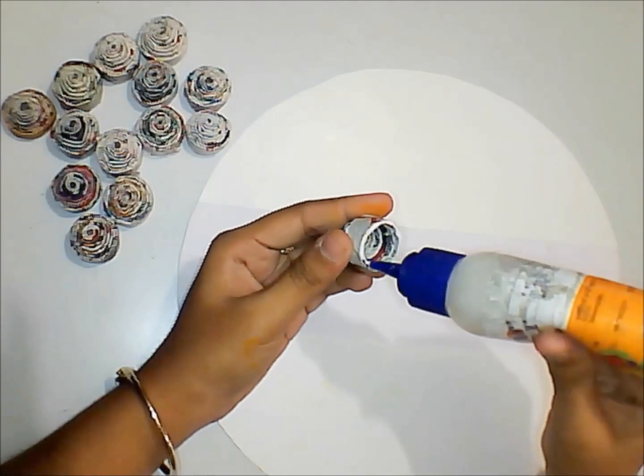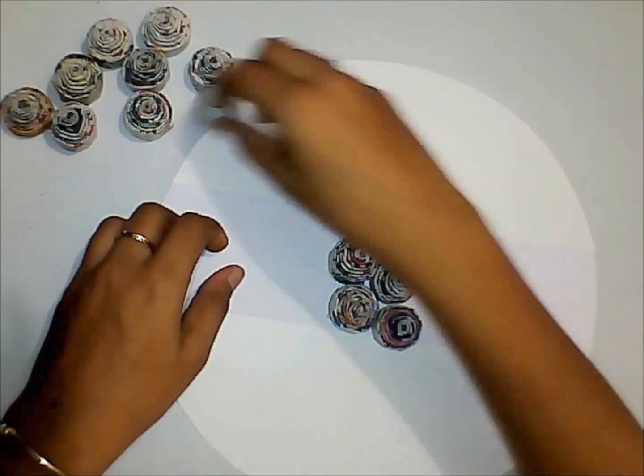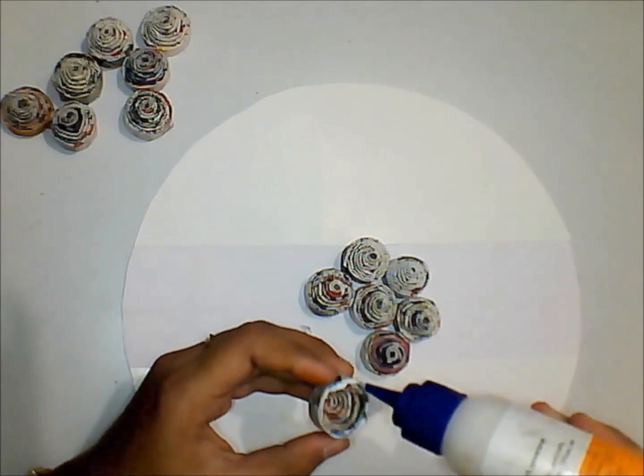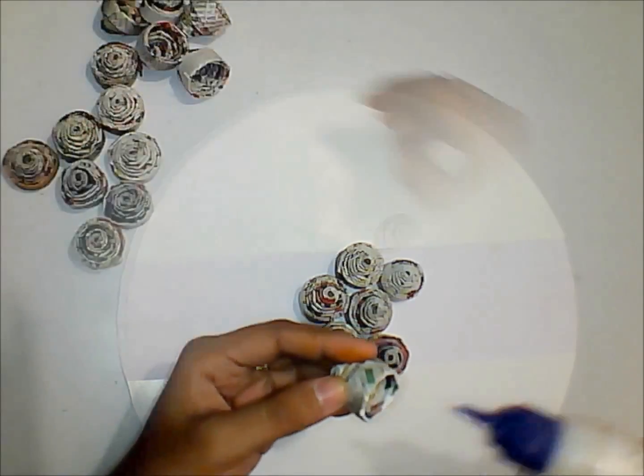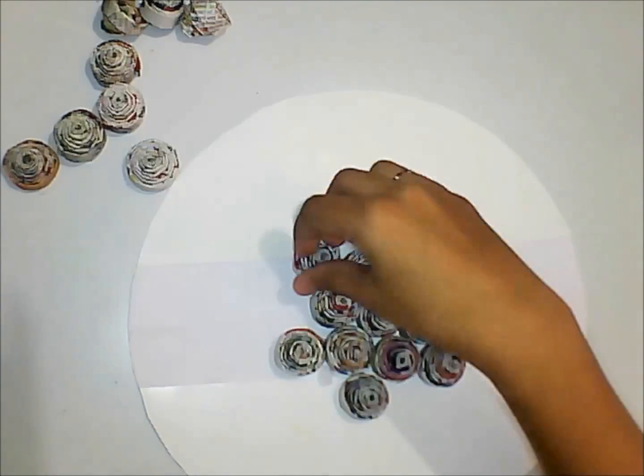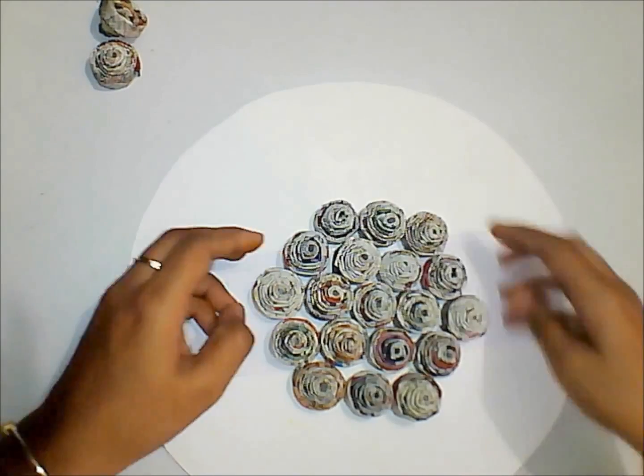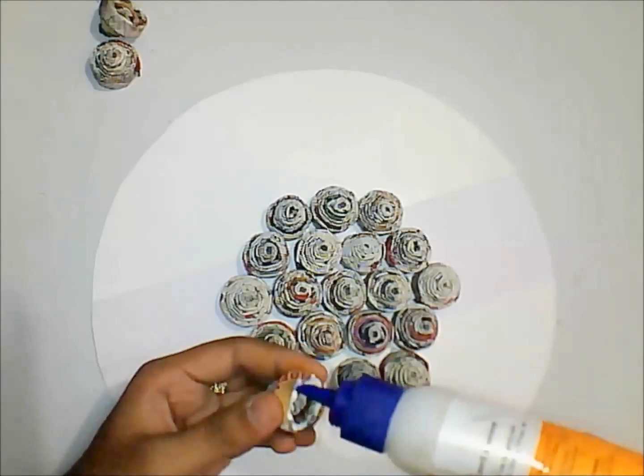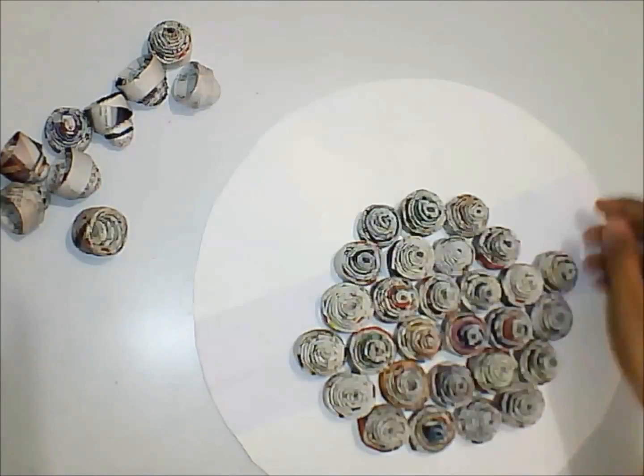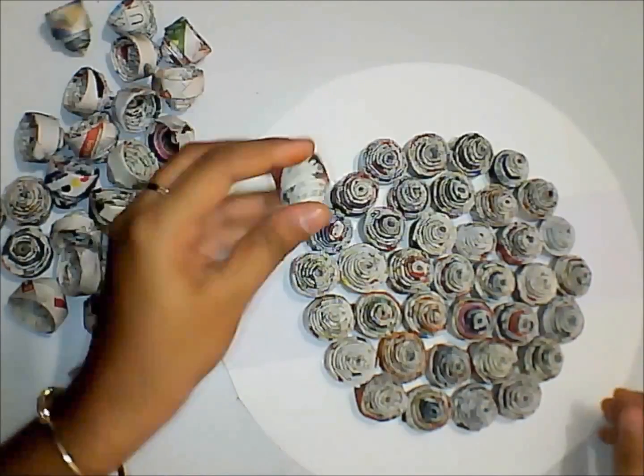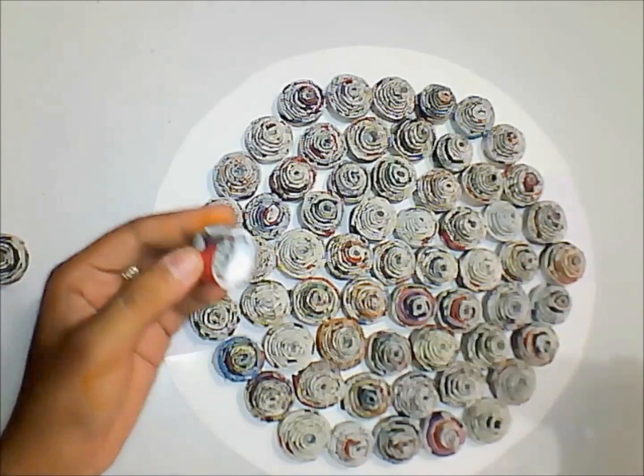Take six such domes and arrange them around the center one in order to form a perfect circle. Stick them one by one using glue. For the third circle, you can follow the way I'm doing it or arrange it in your own way to get a perfect circle shape. Secure them in their place by using glue. In the same way, you can add a fourth circle. First arrange and then secure with glue. Similarly, you can arrange the fifth circle and stick them using glue.